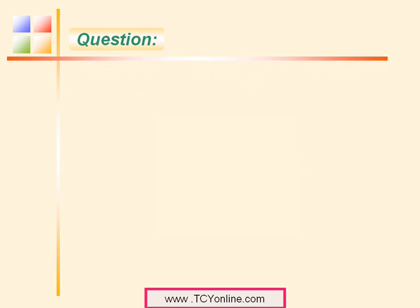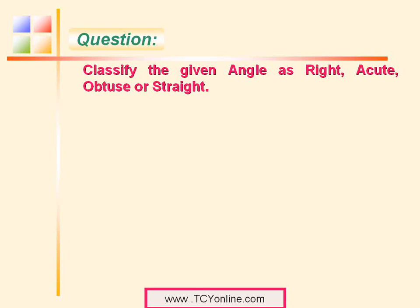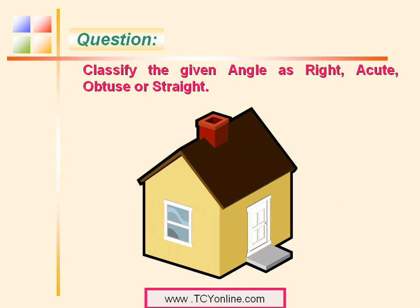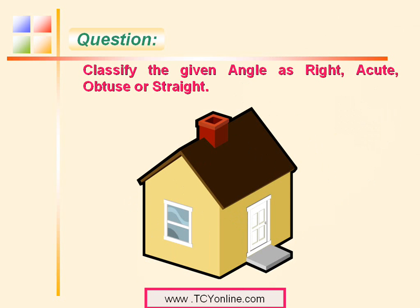Let's look at the next question. Again we need to classify the given angle as right, acute, obtuse, or straight. This is a picture of a house, and we need to tell which type of angle it is. We can see that these two sides are standing on each other, so it appears to make a 90 degree angle. Since a right angle has a measure equal to 90 degrees, this is simply a right angle.